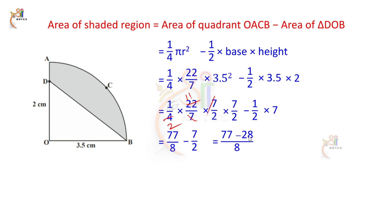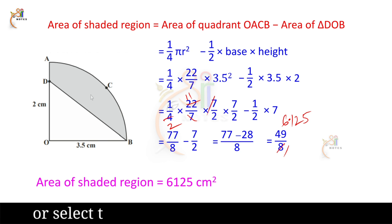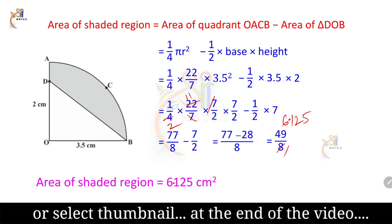So 77 minus 28 equals 49, giving 49 by 8. Dividing, 49 by 8 equals 6.125. Therefore, the area of the shaded region is 6.125 square centimeters.